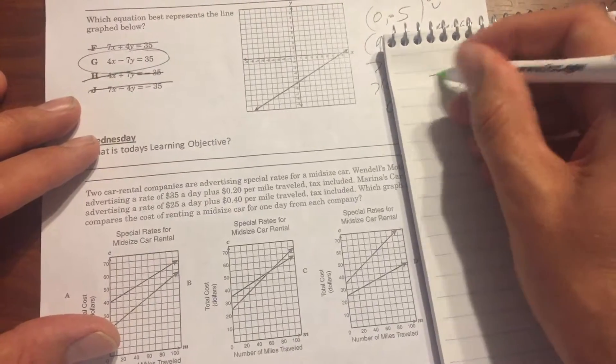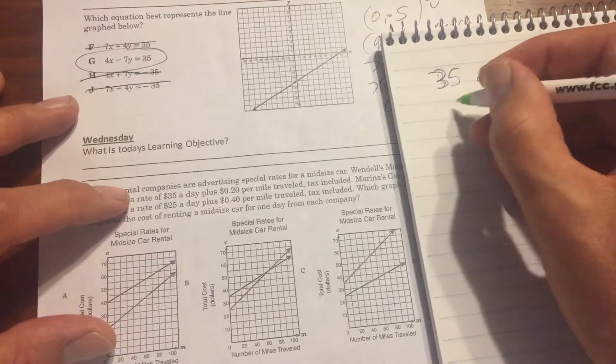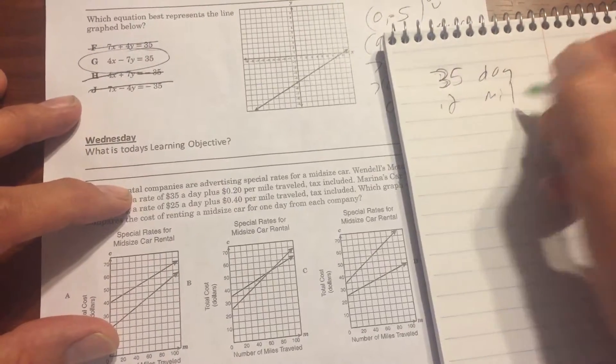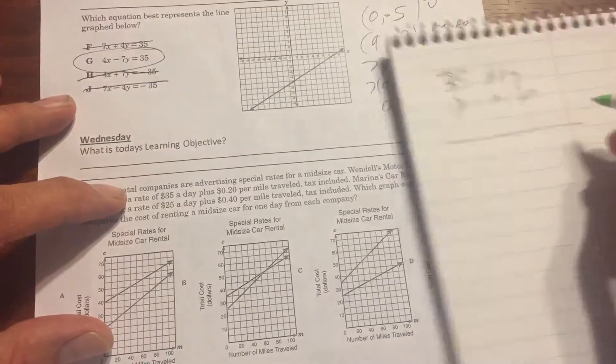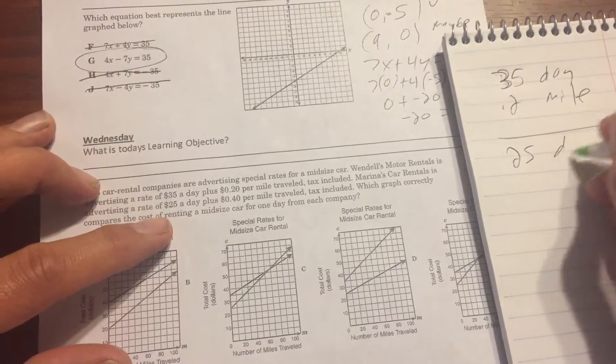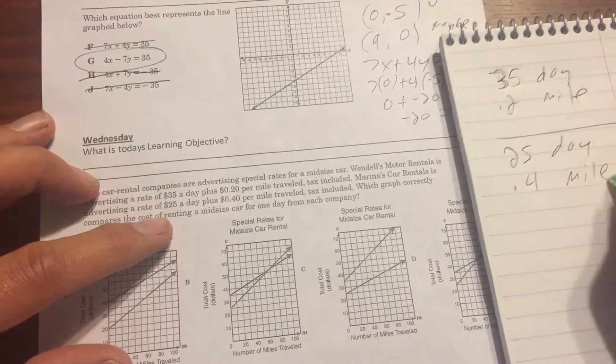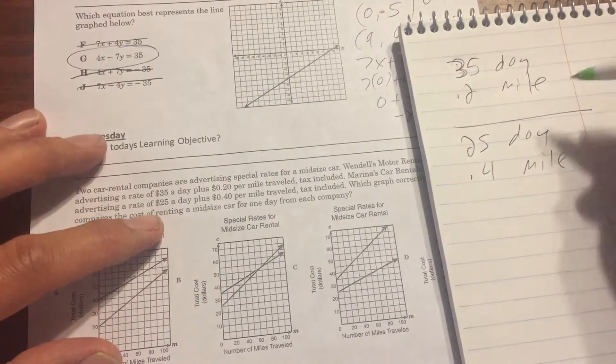So we know $35 a day and then we know $0.20 a mile. And then we also know $25 to rent a car a day and then we know that it's going to be $0.40 a mile. So those are things that we know.